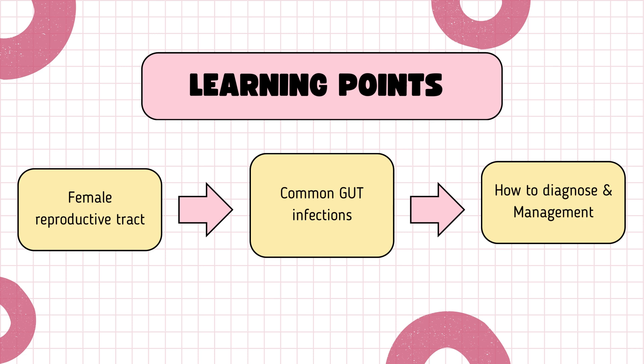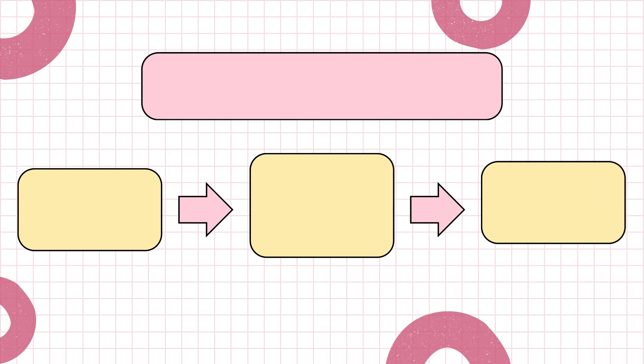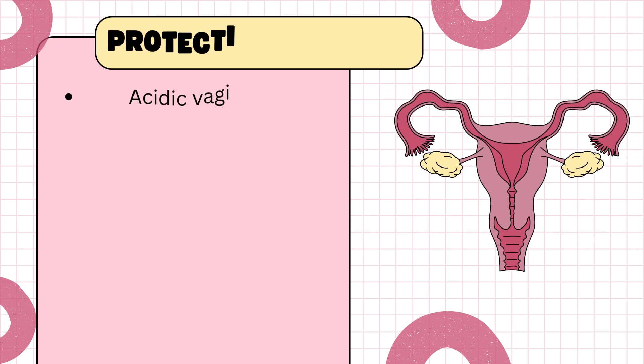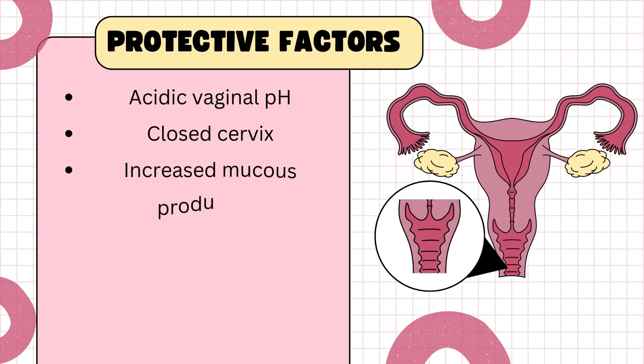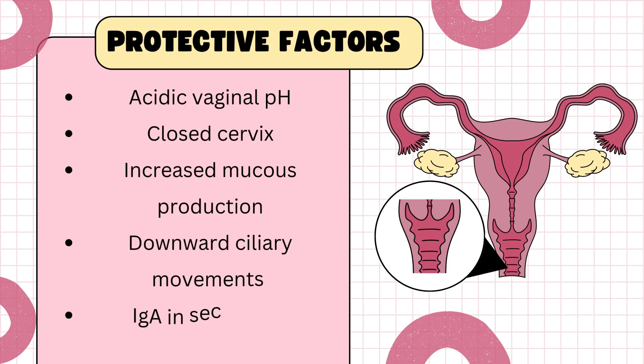First of all, let's talk about the protective factors of the female genitourinary tract. The female genitourinary tract has several defense mechanisms to protect us against infections. The vagina normally has an acidic pH around 4.5, and this is maintained by Lactobacillus species which produce lactic acid, creating an environment which kills many pathogens.